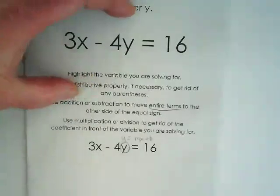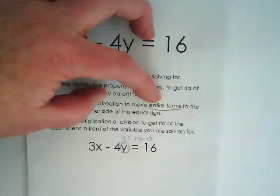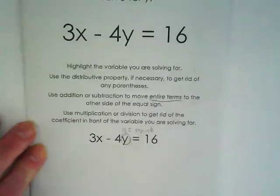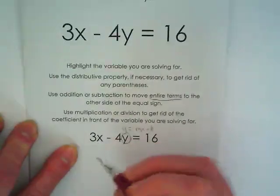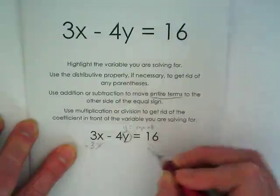So the next is we're going to use addition or subtraction to move entire terms to the other side of the equal sign. Which one of these are we going to work with? The 3x. It is a positive 3x, so how are we going to move it? The entire term.